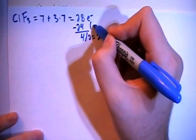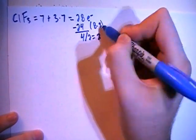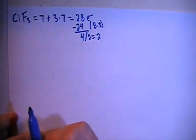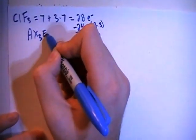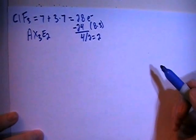And since 24 is equal to 8 times 3, that means that this structure will have an AX3E2 shape.